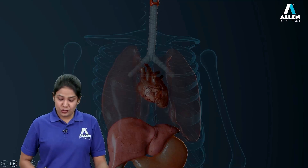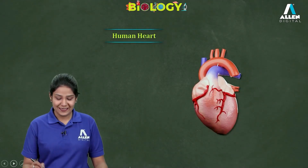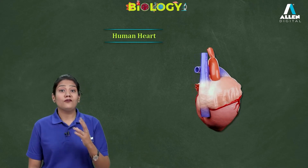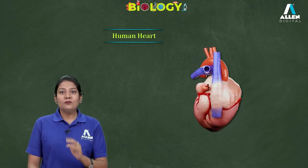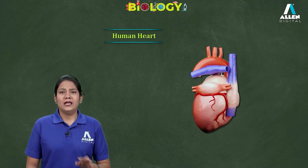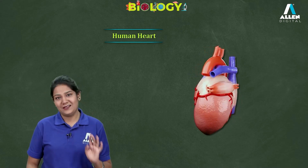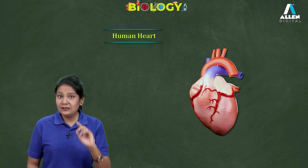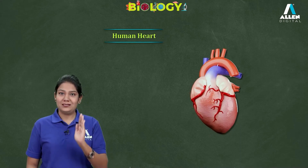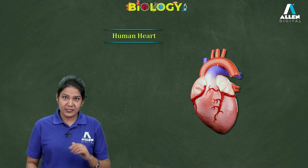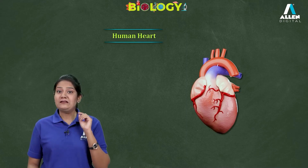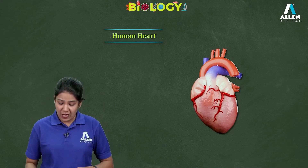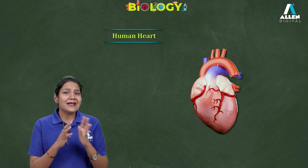In biology, whenever we study the structure of an organ, we assume that somebody is standing in front of us. So this is my right hand and this is my left hand. Since somebody is standing in front of me, their right side would be this one and their left would be this one — it is vice versa. Always remember this.